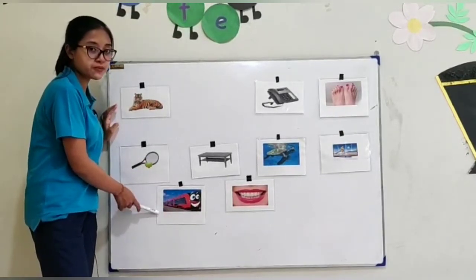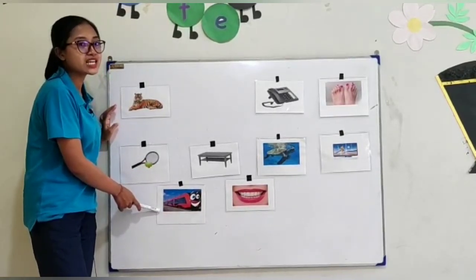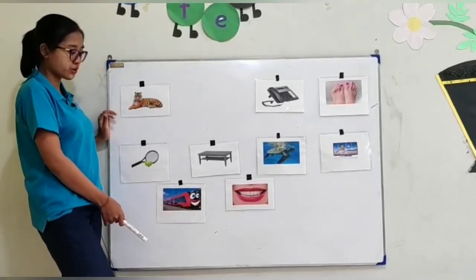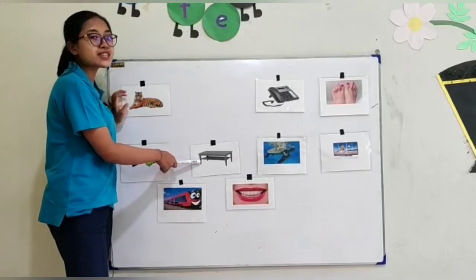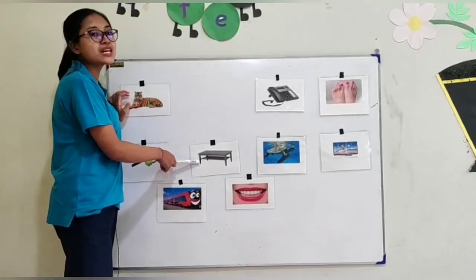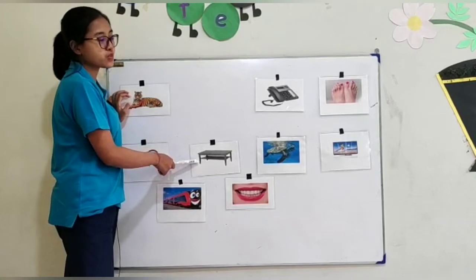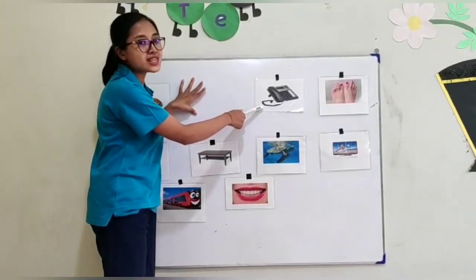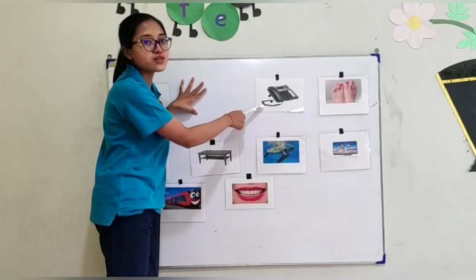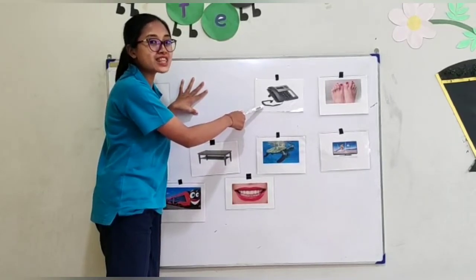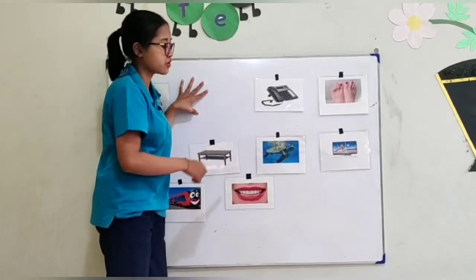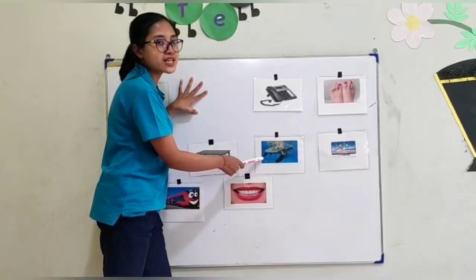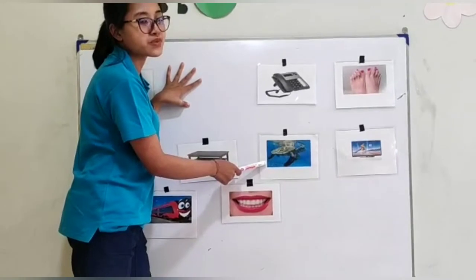How about this one? This is train — train, good! This is table. Repeat once again — table, table, good! This one — this is a telephone. This is telephone, good! What animal is this? This is turtle — repeat once again, turtle, good!